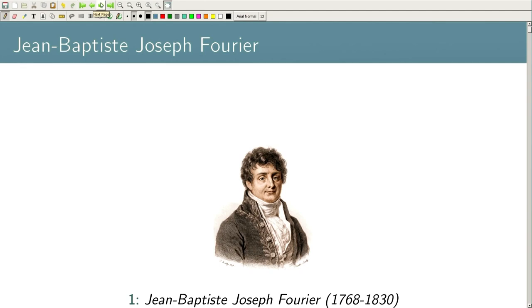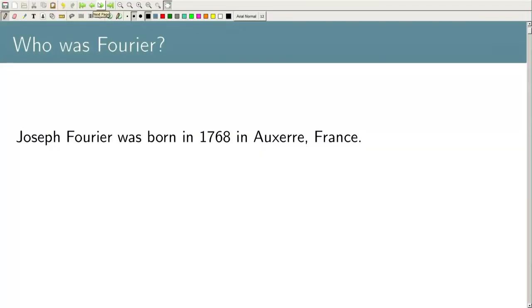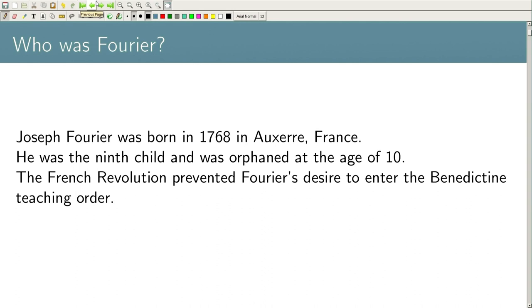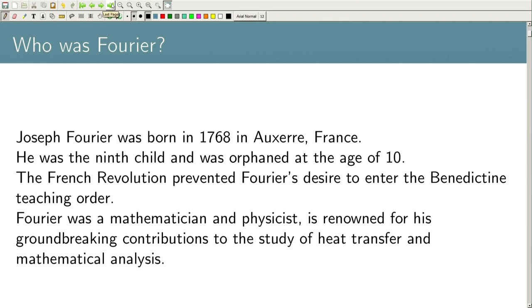This is Joseph Fourier, who initiated the study of Fourier series, which has had a profound impact in every sphere of mathematics. Fourier was born in 1768 in Auxerre, France. He was the ninth child and was orphaned at the age of 10. The French Revolution prevented Fourier's desire to enter the Benedictine teaching order, which was basically reserved for elite people. Fourier was a mathematician and physicist, renowned for his groundbreaking contribution to the study of heat transfer and mathematical analysis.